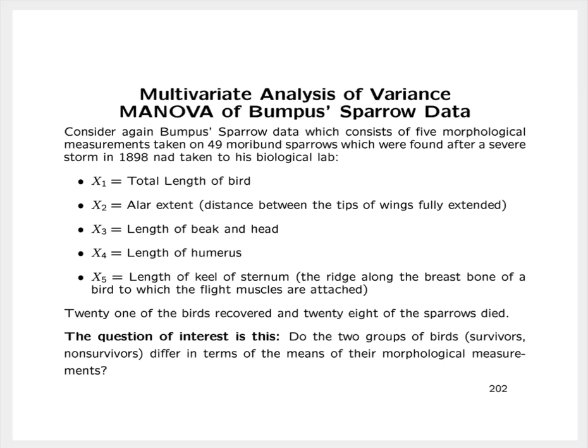X1 is the total length of the bird. X2 is the alar extent, which is the distance between the tips of the wings when they are fully extended. X3 is the length of the beak and head. X4 is the length of the humerus. And X5 is the length of the keel of the sternum, which is the ridge along the breastbone of a bird to which the flight muscles are attached.